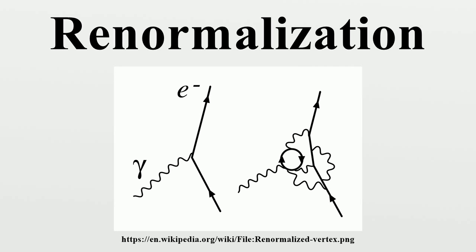There are exactly three one-loop divergent diagrams in quantum electrodynamics. First, a photon creates a virtual electron-positron pair which then annihilates — this is a vacuum polarization diagram. Second, an electron quickly emits and reabsorbs a virtual photon, called a self-energy. Third, an electron emits a photon, emits a second photon, and reabsorbs the first — this is called a vertex renormalization. The Feynman diagram for this is also called a penguin diagram due to its shape remotely resembling a penguin.